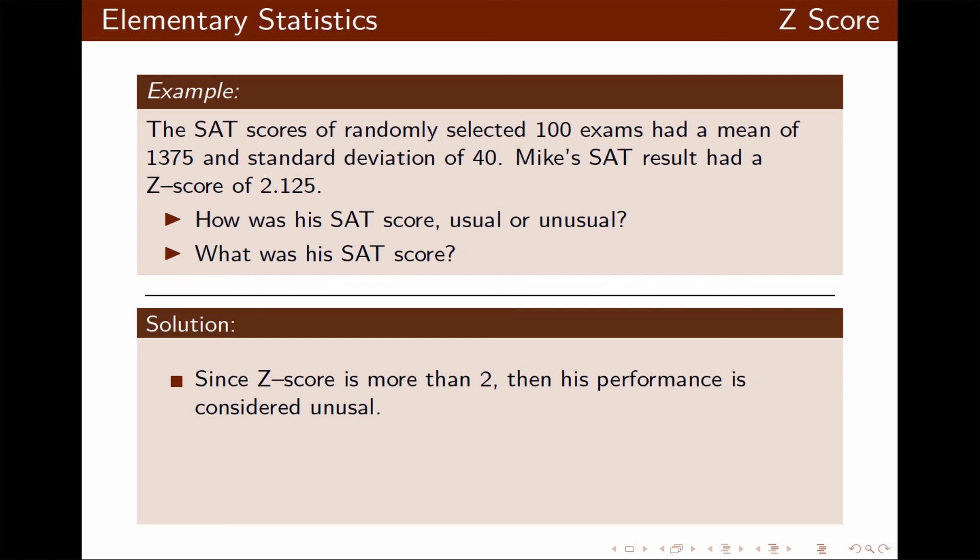What was his SAT score? We plug in the numbers. The z-score is 2.125. His score was unknown, so x. We use the given mean and given standard deviation. Solve the equation by cross-multiplying and solve for x. x is 1,460, which is his SAT score.